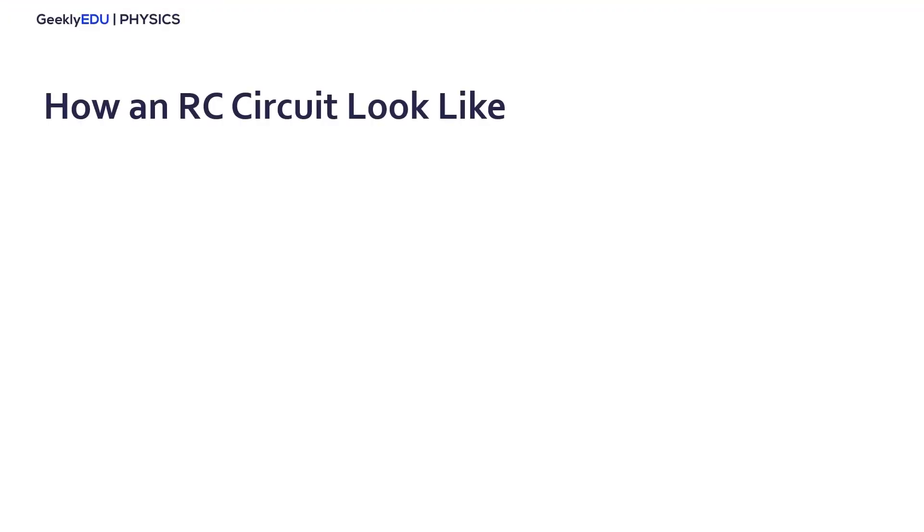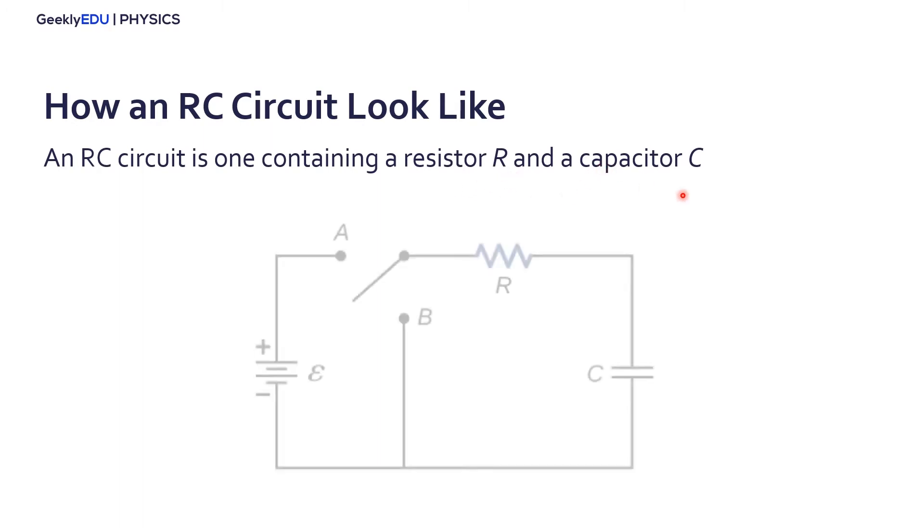Let's start by taking a look at how an RC circuit looks like. An RC circuit is a circuit that contains a resistor R and a capacitor C, and it looks like this most of the times. Here we have our power supply, we have our resistor, and our capacitor.